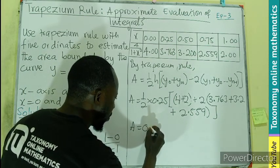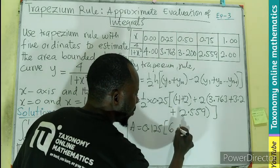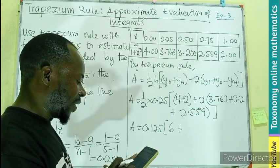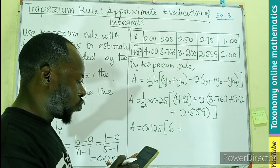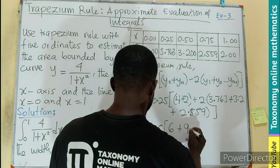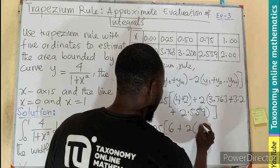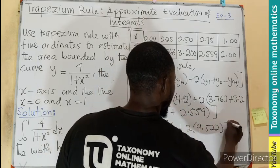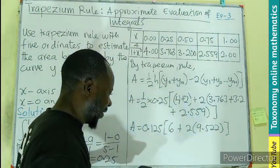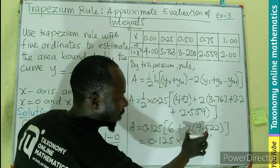which equals 0.125. This multiplies [6 + 2(3.763 + 3.2 + 2.559)]. The sum inside gives us 9.522, multiplied by 2 gives 19.044, plus 6 equals 25.044. So we have 0.125 ×